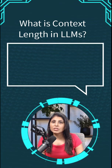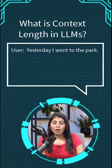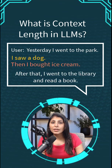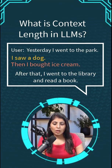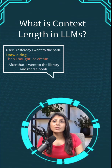For example, imagine you are chatting with ChatGPT and you started your conversation like: yesterday I went to a park, I saw a dog, then I bought some ice cream, and after that I went to a library and over there I read a book. Now this conversation is really short and it can easily fit within the model's context window.